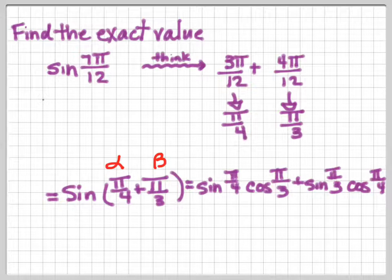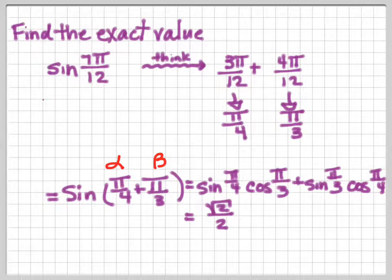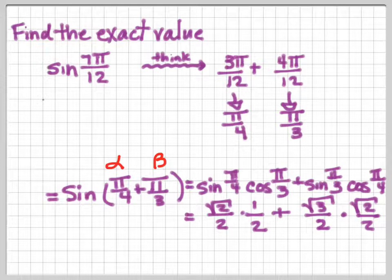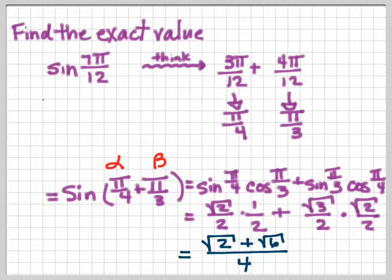Now you know all four of those values. Sine of π/4 is √2/2, cosine of π/3 is 1/2, plus sine of π/3 is √3/2, times cosine of π/4 is √2/2. When we multiply these, we're going to get (√2 + √6) over 4.